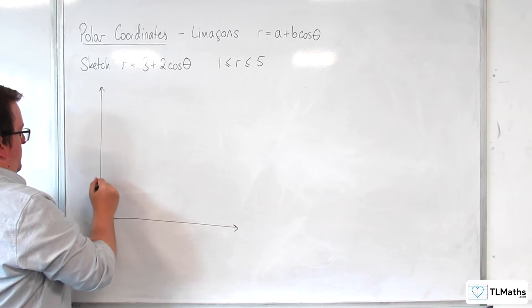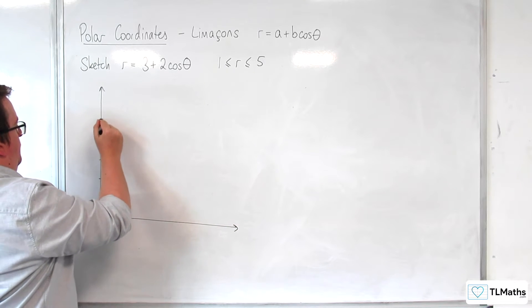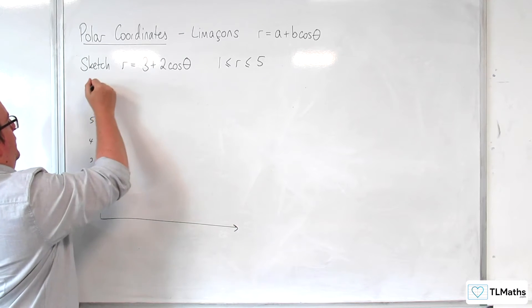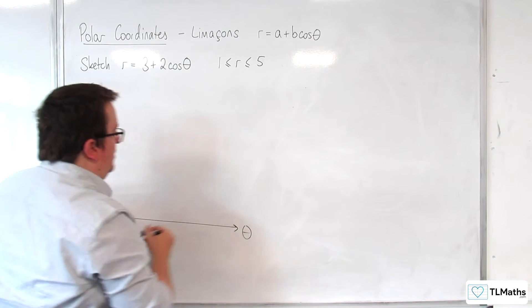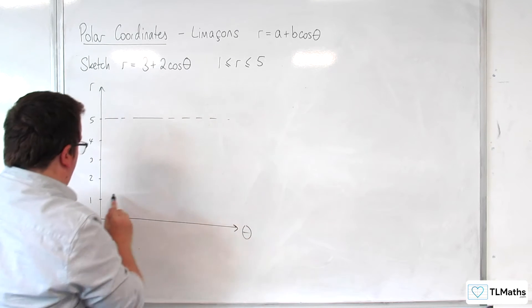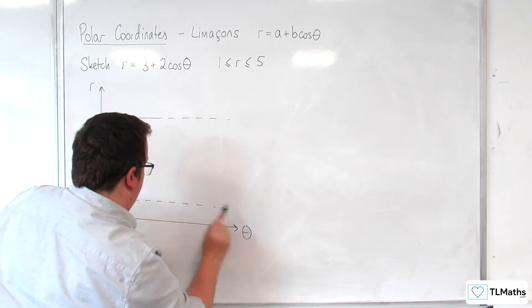Okay, so 1, 2, 3, 4, 5. So these are going to be r and theta on the horizontal axis. And let's draw in some dotted lines, so we know we're bounded between those two.